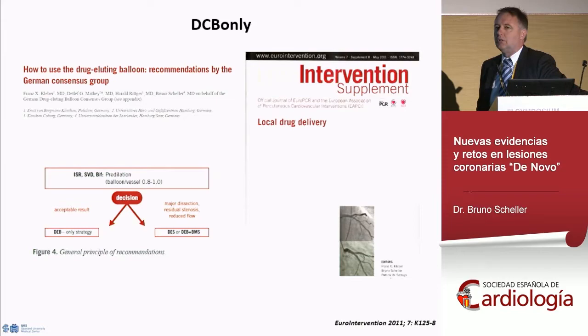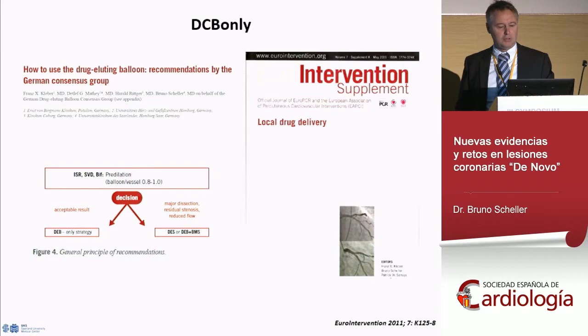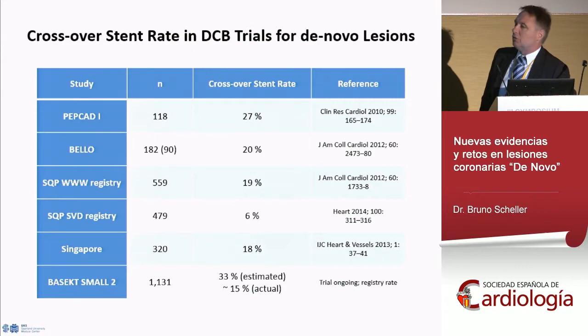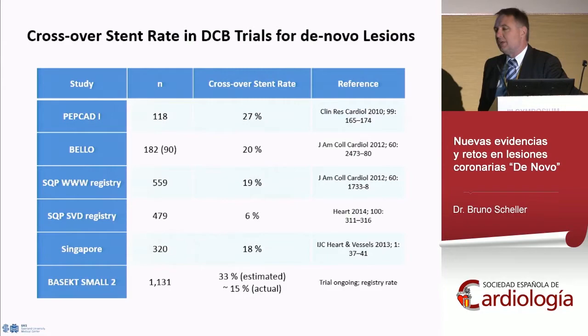Lesion preparation is important for the initial lumen gain, which is directly related to your later outcome. With BVS we learned the same — PSP is the term used. Lesion preparation is becoming increasingly important; it allows you to identify lesions that may do well without stent implantation. The crossover stent rate in DCB trials and registries is in the range of 20–30%. In the BASKET-SMALL trial, which finalized patient inclusion in February, we estimated a provisional stent rate of 33%, but it was about 15%, meaning a minority of lesions require stent implantation according to DCB-only criteria.